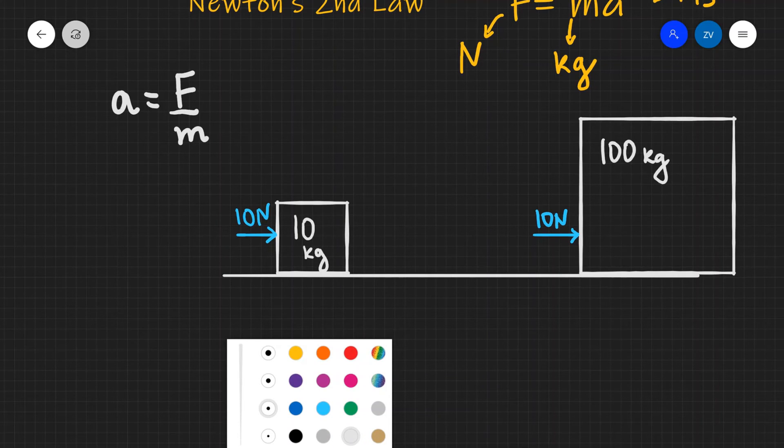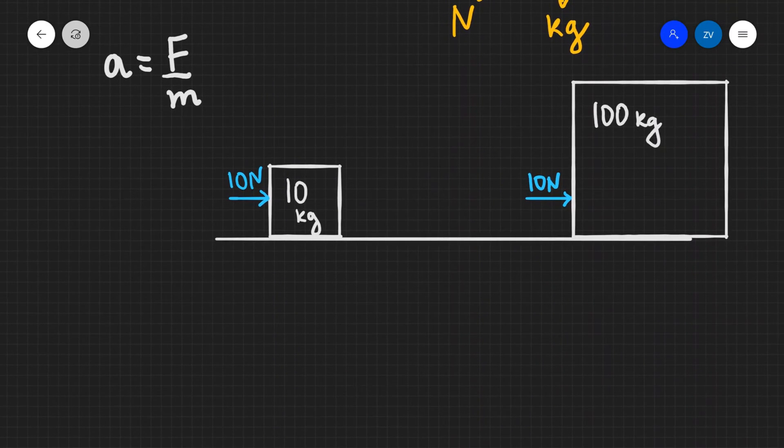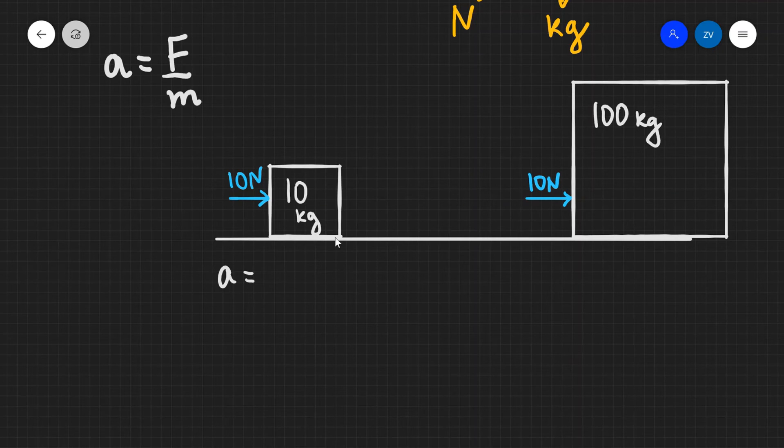Okay, perfect. Now let's go through the answers. So in the first case, our force is, let's just write down the formula. So our force is 10 Newtons and our mass is 10 kilograms, which is going to give us an acceleration of one meter per second squared.